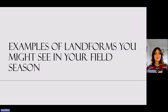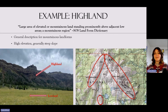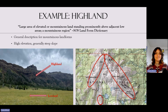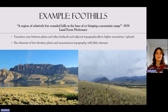Now let's look at some examples of landforms you might see in your field season, with definitions from the Seeds of Success Landform Dictionary. Highlands are described as a large area of elevated or mountainous land standing predominantly above adjacent low areas — a mountainous region. Pictured is Carter Mountain, which stands in stark contrast to the lowland below it. Foothills are described as a region of relatively low rounded hills at the base of or fringing a mountain range — the transition zone between plains and adjacent higher mountains, which we see a lot of on the Front Range of Colorado.